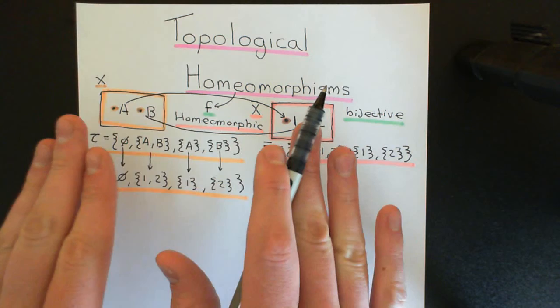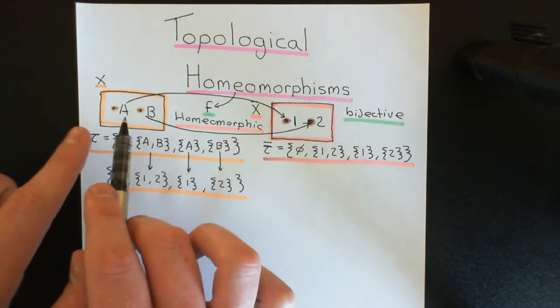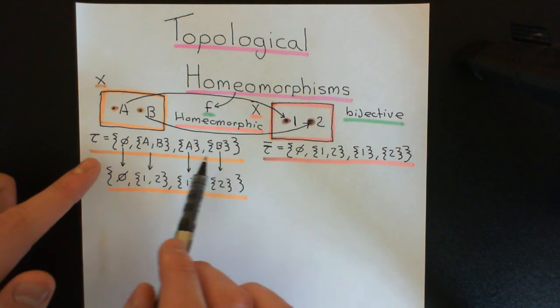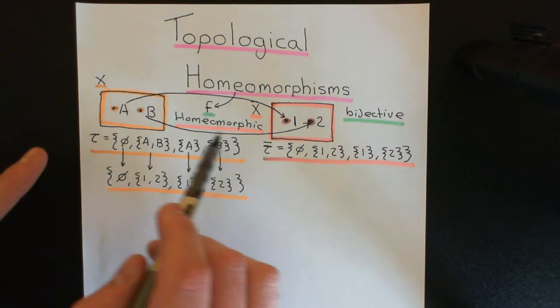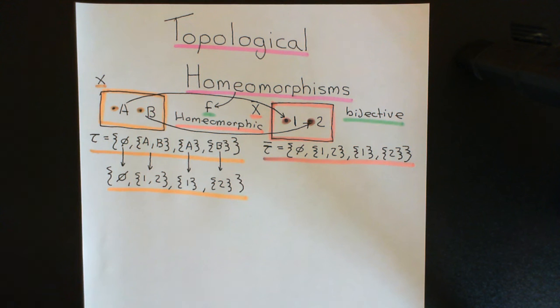If the two spaces are truly homeomorphic — the same up to the fact that you've used different symbols — then there must exist a bijective mapping F from one to the other which acts as a relabelling, such that when you relabel the subsets in the topology of the domain topological space, that topology becomes the topology on the codomain topological space. There must be a bijective correspondence between the subsets in the two topologies.